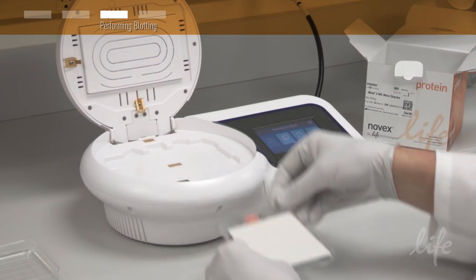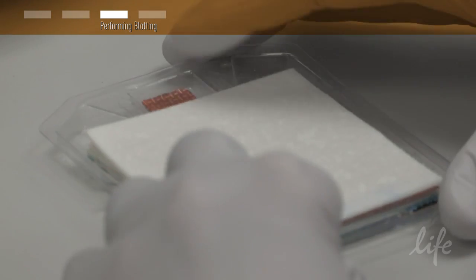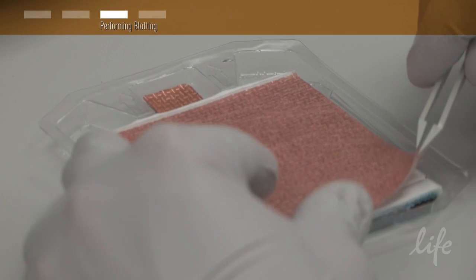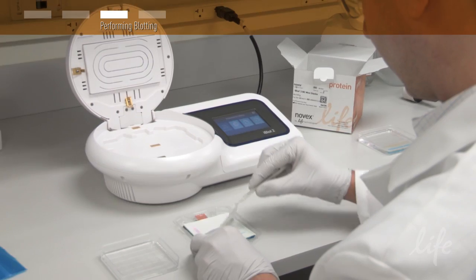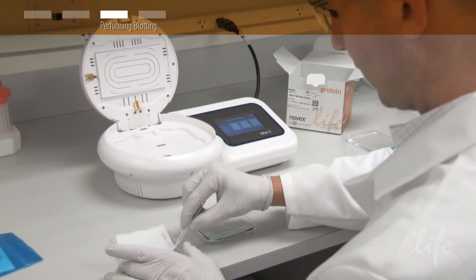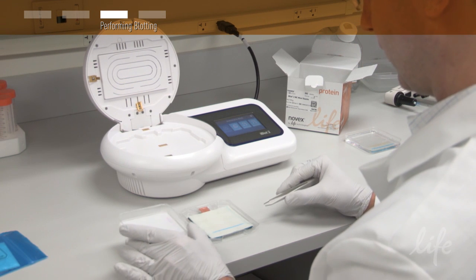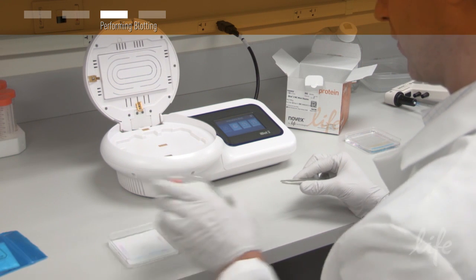To disassemble, open the lid of the device, discard the absorbent pad and top stack and carefully remove and discard the gel and filter paper. Remove the transfer membrane from the stack and either place in water or blocking solution. The bottom stack can be discarded.